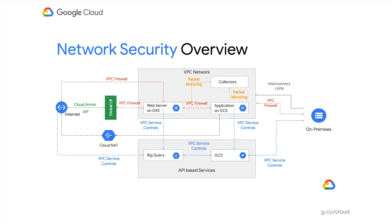We have packet mirroring that allows you to deploy a tap and mirror packets at the VM or container cluster boundary to a configurable collector destination. We also support sending outbound traffic through Cloud NAT, as well as various interconnect and VPN options to enhance privacy and security.